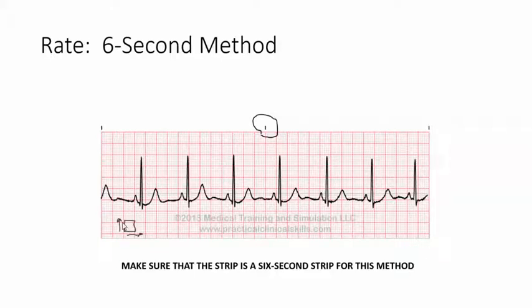Okay, and then each large square, remember the time in seconds is 0.2 and the amplitude is 5 millimeters. Okay, so what you're going to do is you're just going to count the number of R waves. Remember this is QRS. This is the R wave. You're just going to count the number of them. So we have 1, 2, 3, 4, 5, 6, 7. So the heart rate is 70 beats per minute.